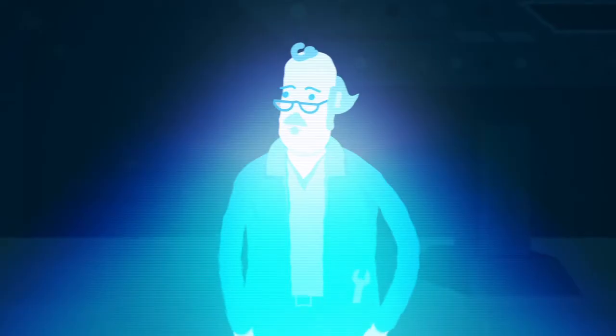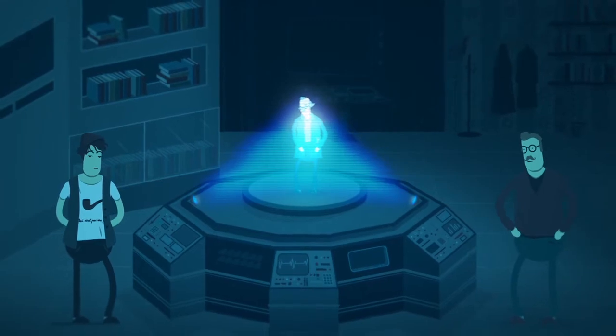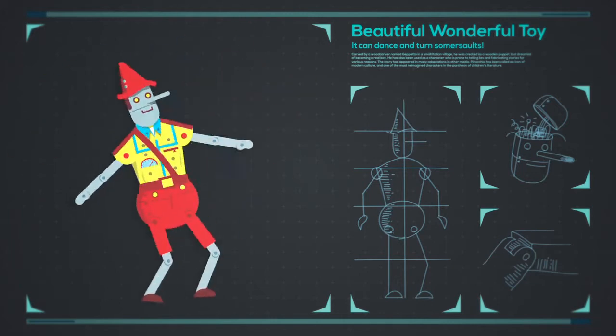You've got to help me, Mr. Holmes. My name is Joseph, and something awful is happening. Some time ago, I created a beautiful, wonderful toy. It can dance and turn somersaults. Kids love it.